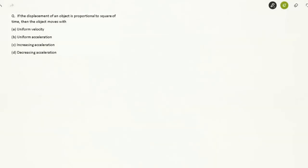Hi, in this question it's given that the displacement of an object is proportional to the square of time, and we have to ascertain whether the object moves with uniform velocity, uniform acceleration, increasing acceleration, or decreasing acceleration.